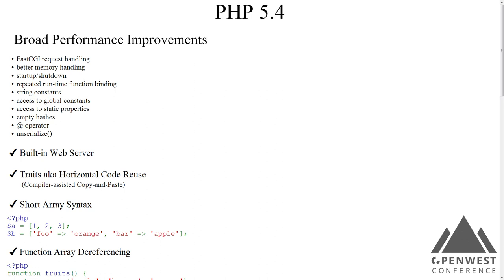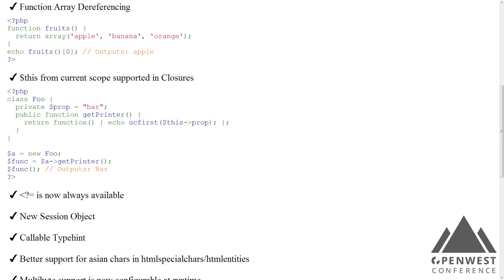Another new feature is short array syntax — you can drop the array() brackets and just use square brackets for arrays. You can also do function array de-referencing, a FAD as we call it. Basically, you can call a function, and if that function returns an array, you can dereference it directly on the function call.